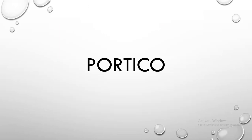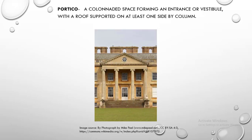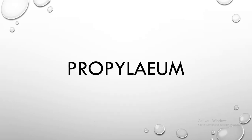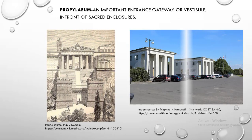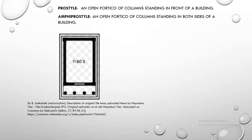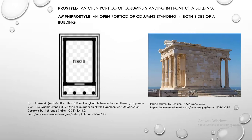Podium. Podium is a continuous pedestal. Portico. Portico is a colonnaded space forming an entrance or vestibule, with a roof supported on at least one side by columns. Propyleum. Propyleum is an important entrance gateway or vestibule in front of sacred enclosures. Prostyle. Prostyle is an open portico of columns standing in front of a building. Amphiprostyle: an open portico of columns standing on both sides of a building.